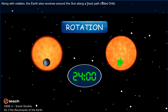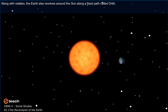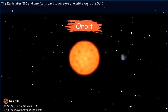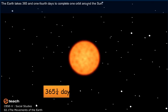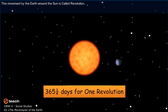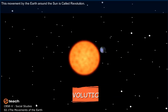Along with rotation, the Earth also revolves around the Sun along a fixed path called Orbit. The Earth takes 365 and one-fourth days to complete one orbit around the Sun. This movement by the Earth around the Sun is called Revolution.